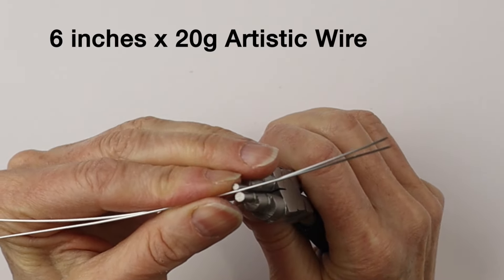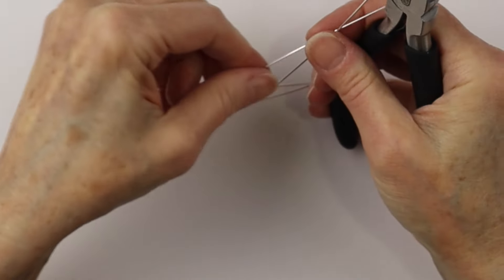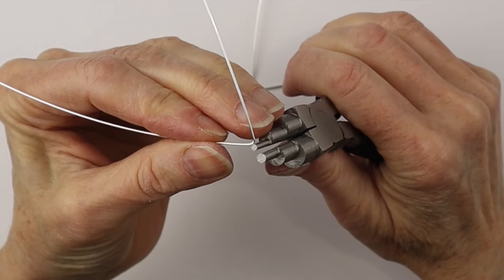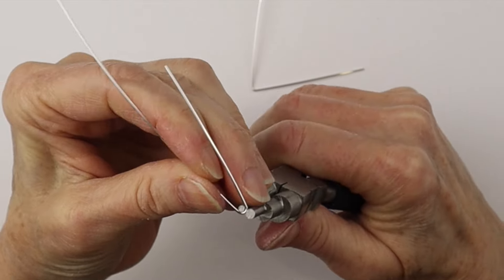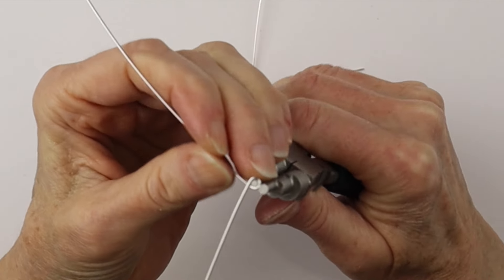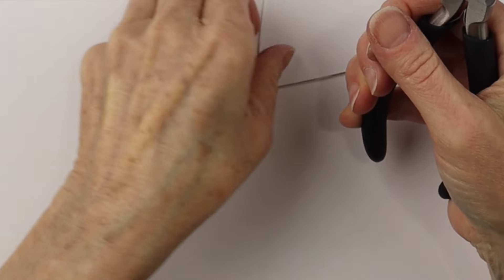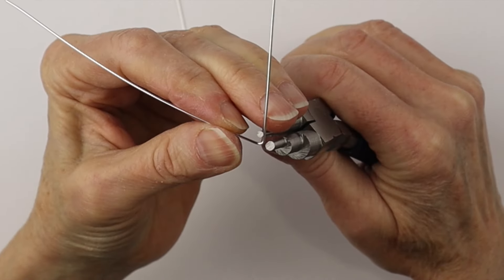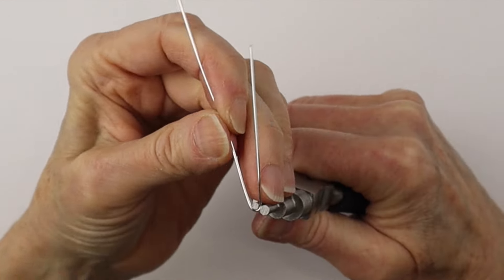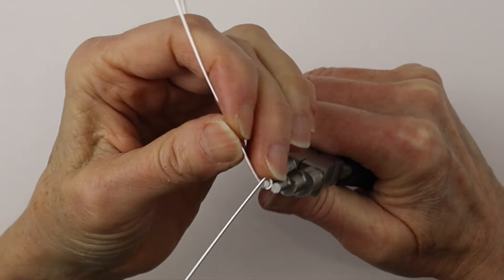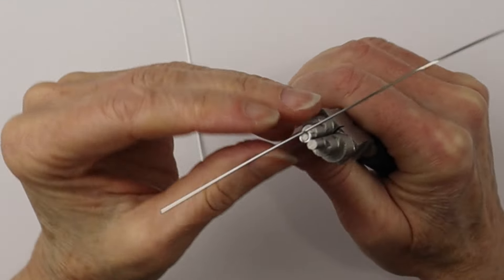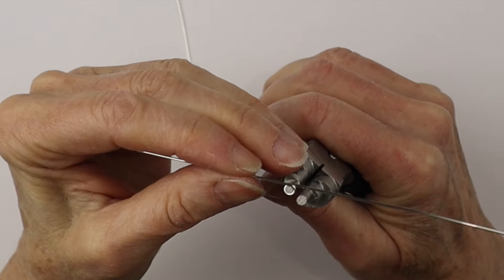We'll start with about 6 inches of 20 gauge artistic wire, and I'm going to do a little loop about 3 to 4 inches from one end. We're using the smallest part of the bail making pliers and we're just going to twist it around into a loop, having the wires go straight out to either side.